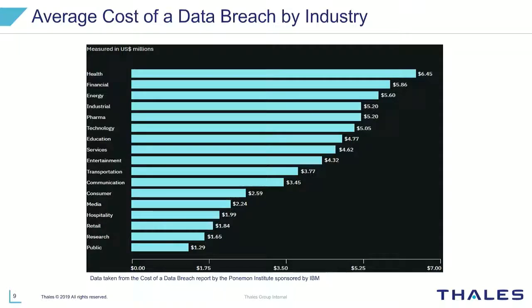When I look at all these different industry segments, I think about data security in terms of who has the biggest problem if they did have a breach — and in my mind those are the organizations holding a lot of consumer information. When we look at APRA-regulated entities, we're looking at financial services institutions, insurance providers, and superannuation providers, which pretty much encompasses every single person here in Australia. If those organizations are facing increased threat from outside, we need to evolve in order to address the new threats that are coming up.